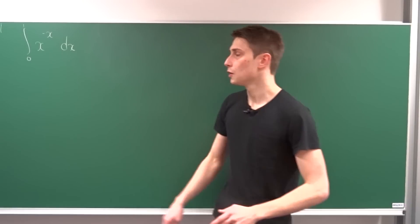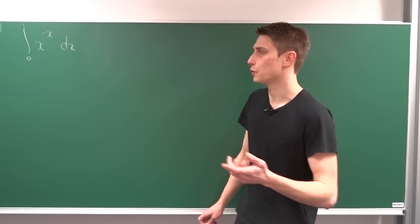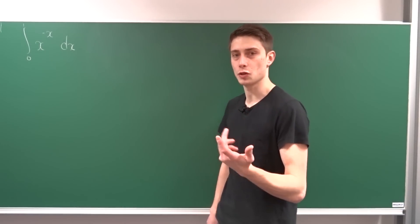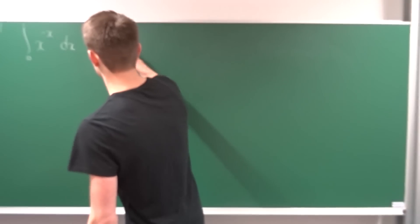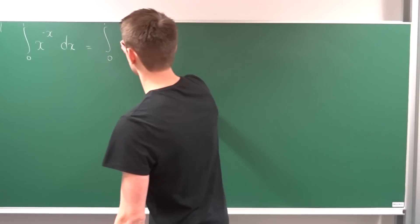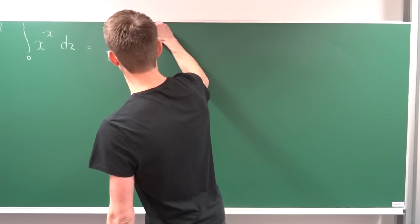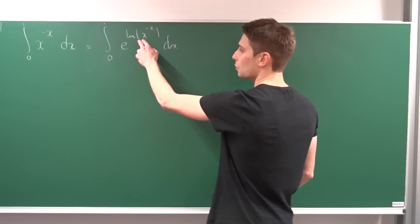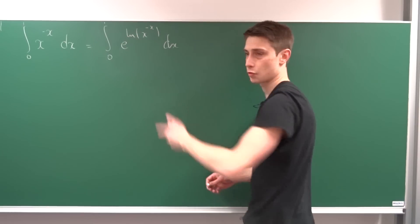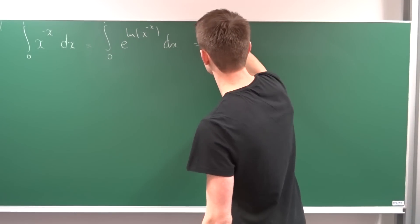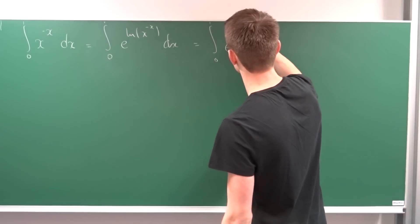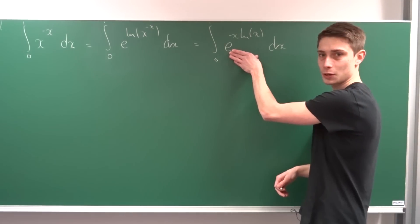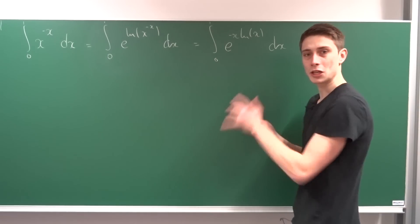First, this integrand looks a bit ugly, so we want to transform it using e to the ln of something. That's a nice property — we are going to turn it into the integral from 0 to 1 of e to the ln(x) to the power of minus x, dx. Then we use the natural log property to bring this minus x to the front, giving us the integral from 0 to 1 of e to the minus x ln(x), dx.